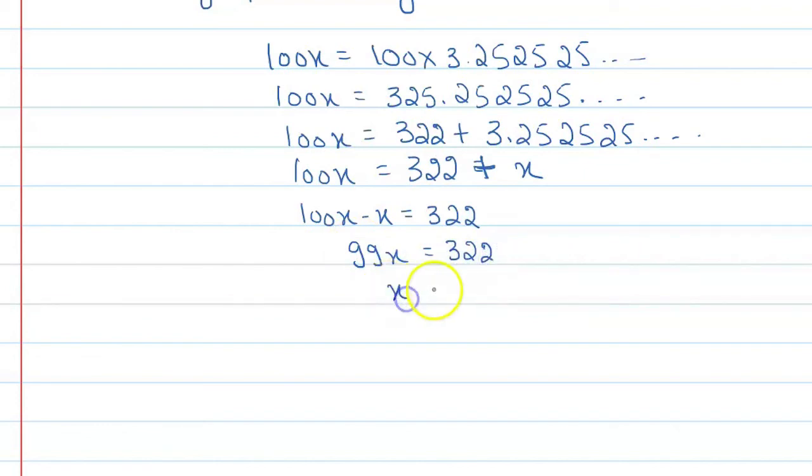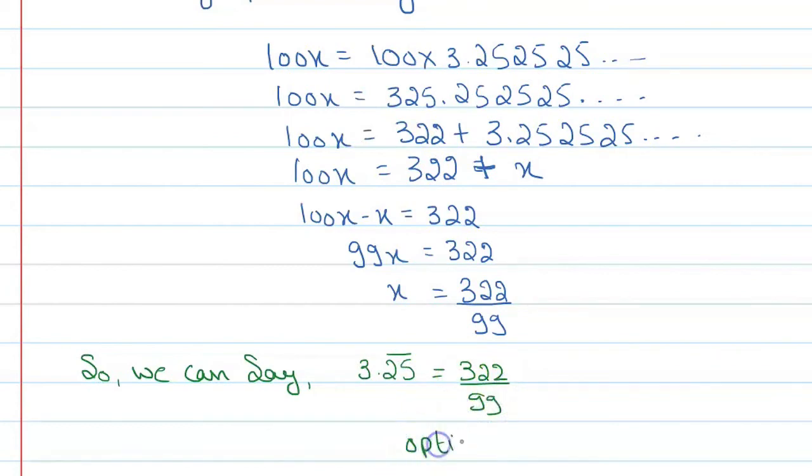So x is equal to 322 upon 99. This is the value. So we can say that 3.25 bar is equal to 322 upon 99, and the correct option is C. Correct option is C. All right, thank you.